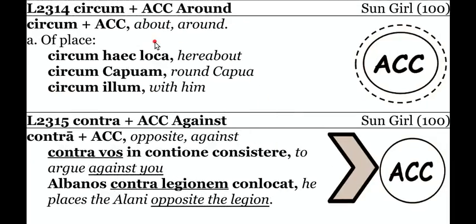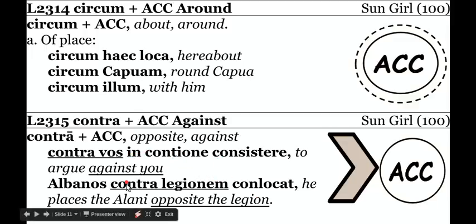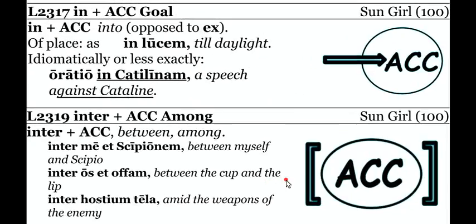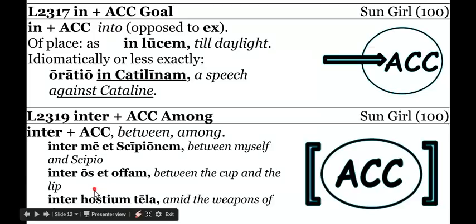Circa plus the accusative means around — think of circumflex, circumcision, circumference. Around these places, around Capua, or around him. Contra plus the accusative means against or opposite — against you, to stand an argument against you. He locates the Albanians opposite the legion, so contra means opposite or against. In plus the accusative, as we said, only with verbs of motion — into — and it can also mean against. Inter plus the accusative means between or among.